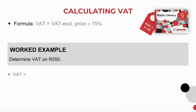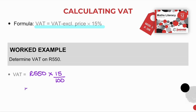Let's calculate VAT. The formula you'll use is: VAT = VAT exclusive price × 15%. Let's look at a worked example. Determine VAT on R550. We take our VAT exclusive price of R550 and multiply it by 15%. That gives us a value of R82.50, which is the VAT that would be paid over to the government.